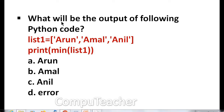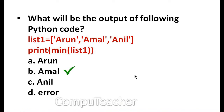Next one. What will be the output of the following Python code? List1 = ['arun', 'amel', 'anil']. Print min(list1). Options: arun, amel, anil, error. Which is the answer? Answer is amel.